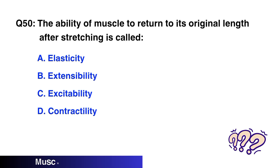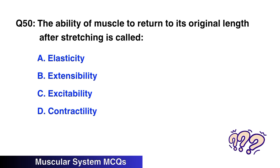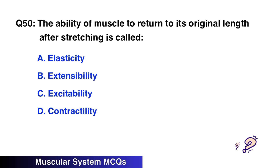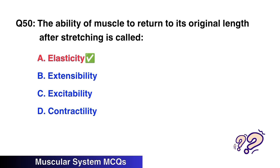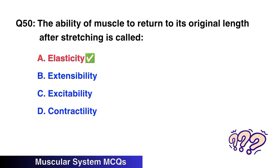Question No. 50: The ability of a muscle to return to its original length after stretching is called — the right option is A: Elasticity.